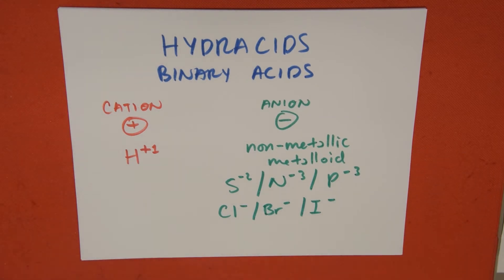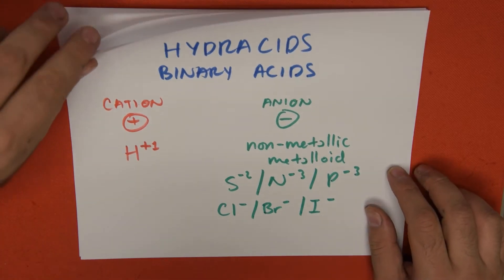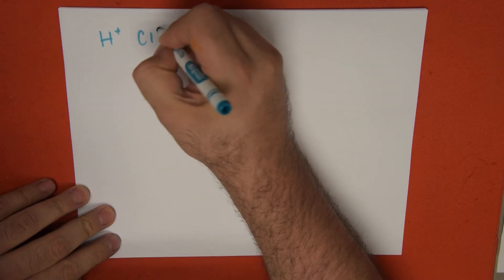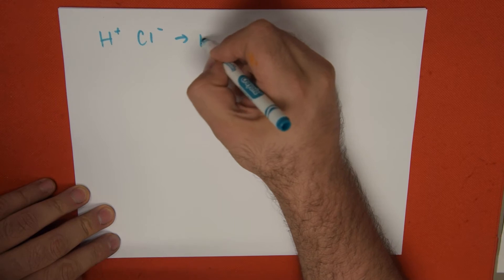and iodine. We do our typical crisscross and mix them, and once we mix them we can finally name them. When we mix them, we get H+ with Cl- giving us HCl.